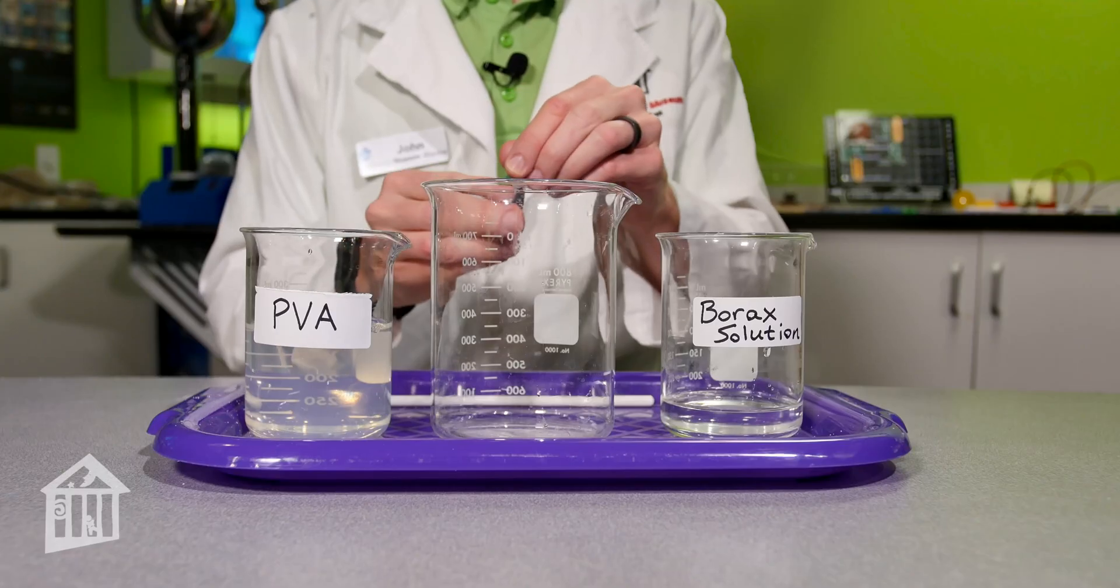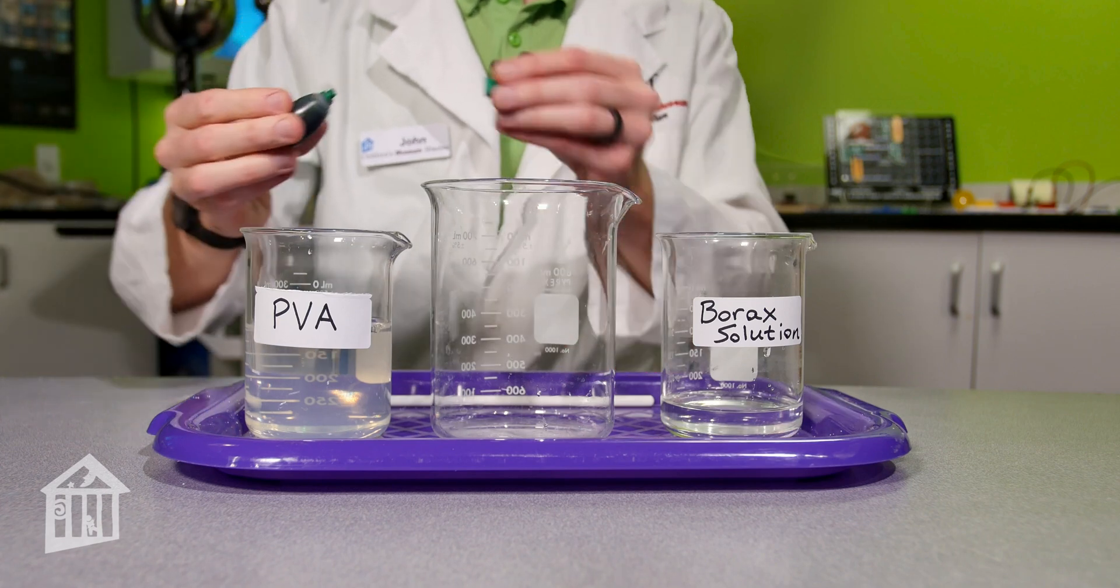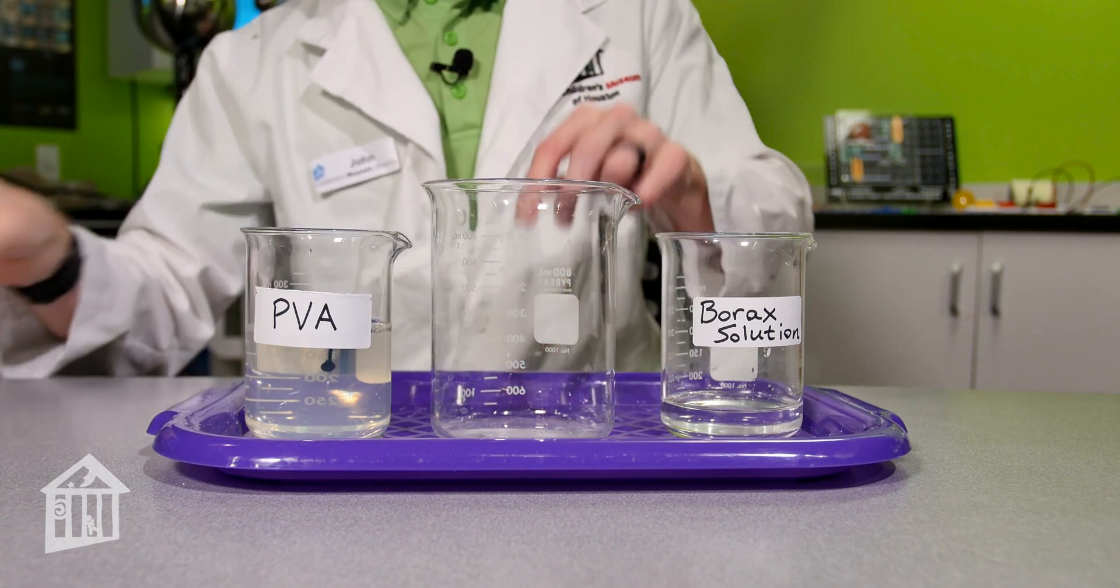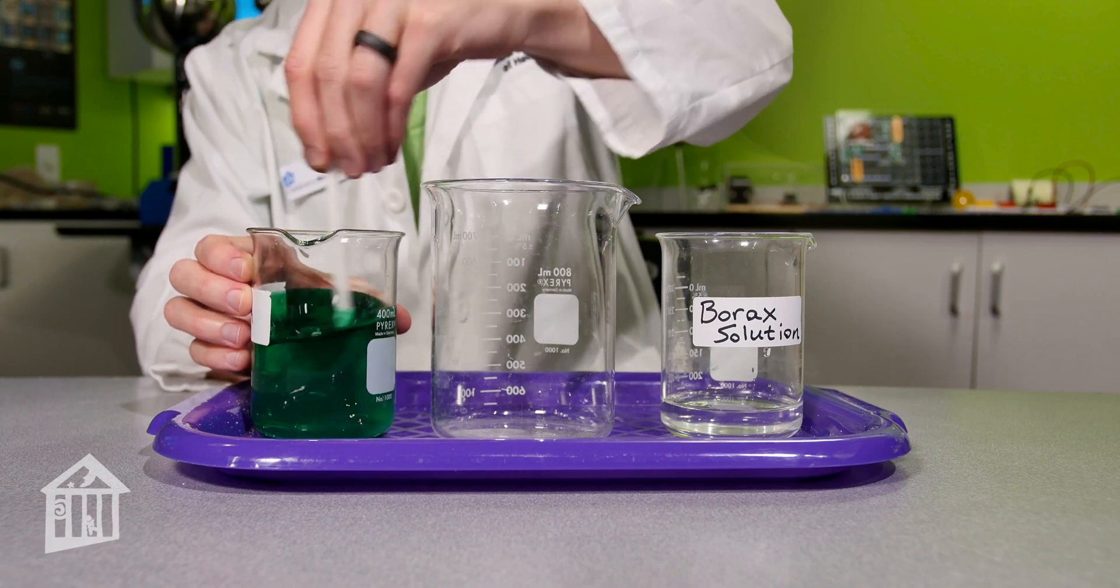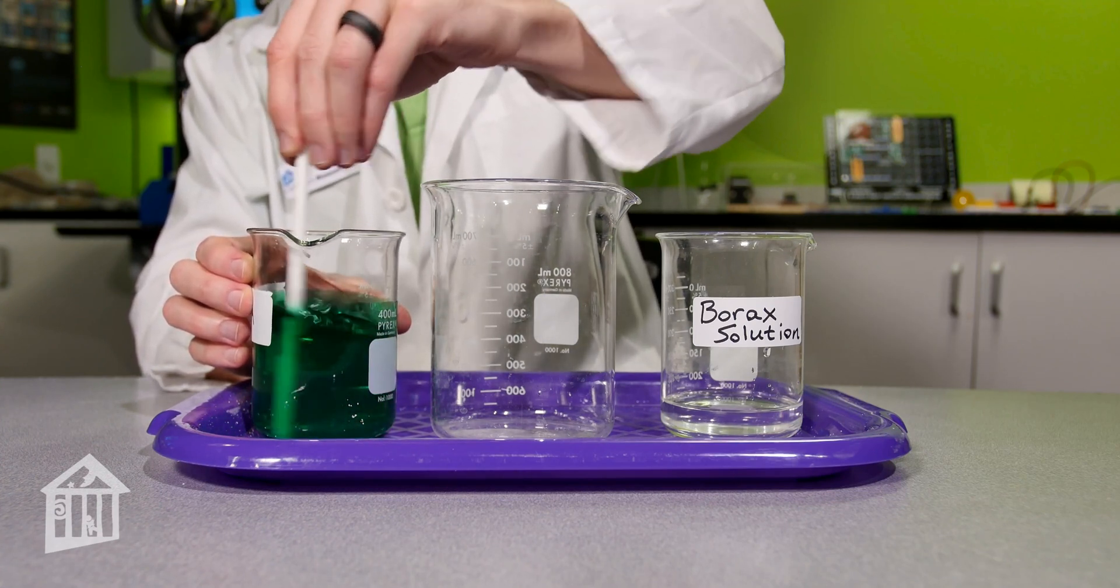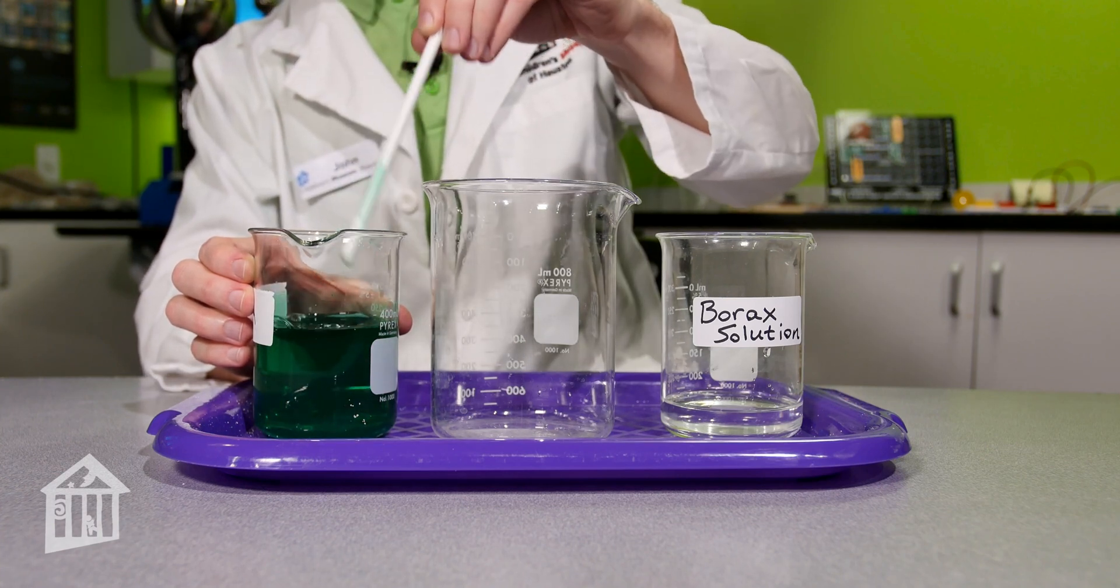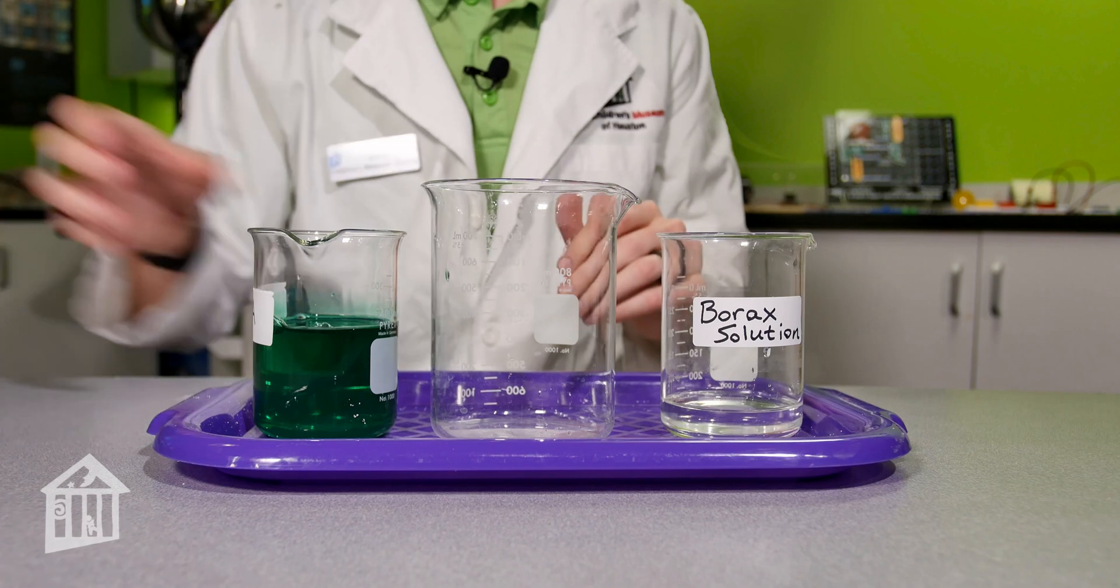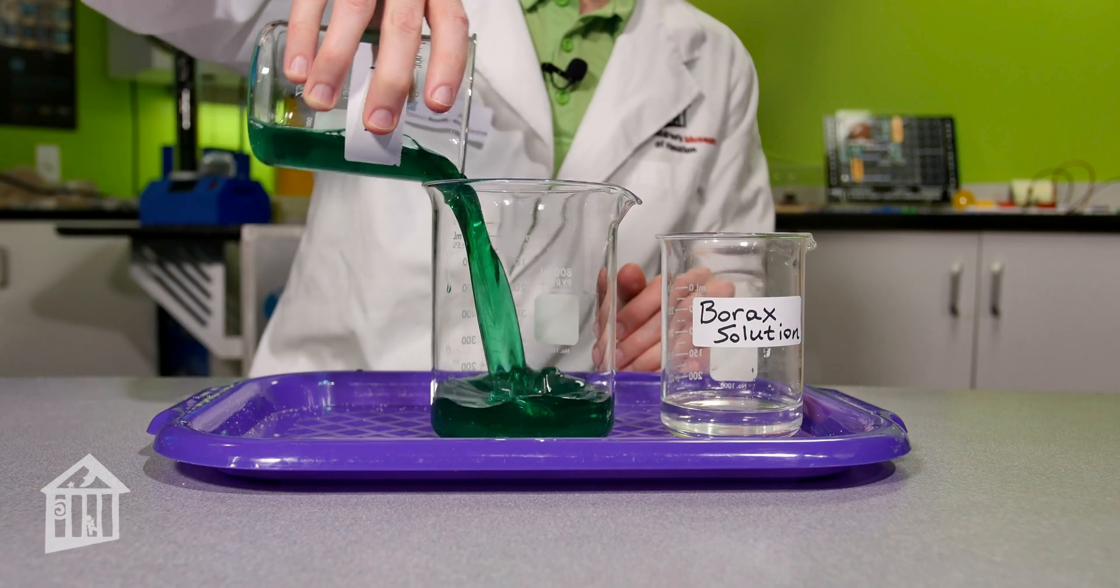Before making our slime today, make sure you're wearing goggles and have adult supervision. The slime we're making will use 8 ounces of polyvinyl alcohol. I'm gonna add a little food coloring to spice up our slime, and then we're gonna add that into the larger beaker with the borax solution coming in next.